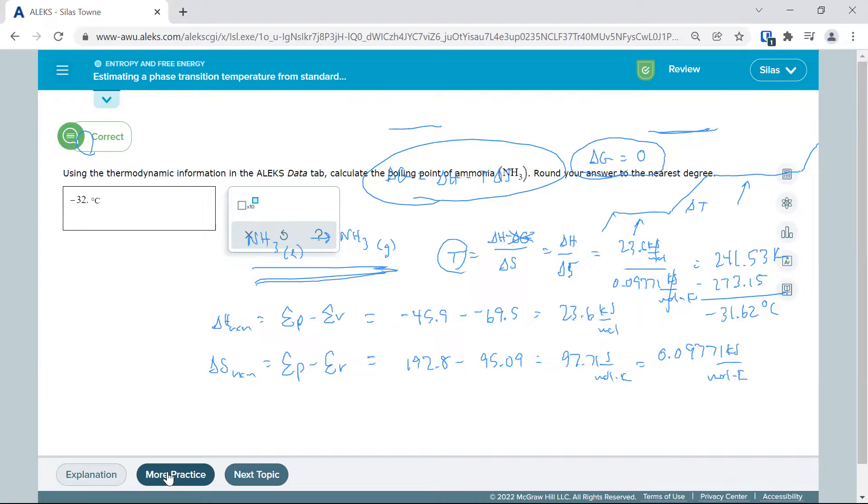Well, if you were looking at melting, you would write NH3 solid to NH3 liquid, and you would have different values for all of these. And so you'd end up with a different number than the boiling point. So you can solve for boiling or melting using this process.